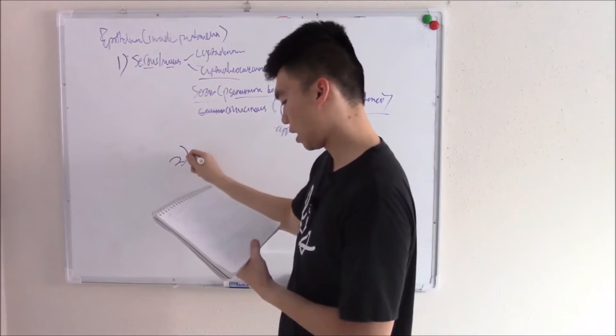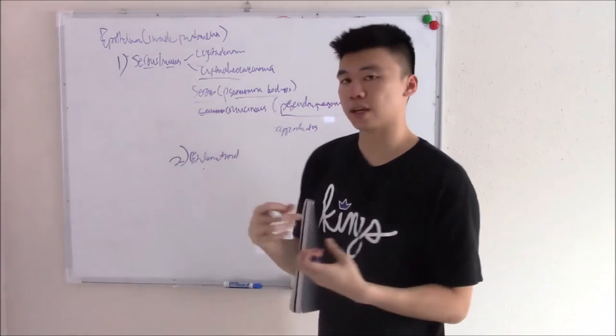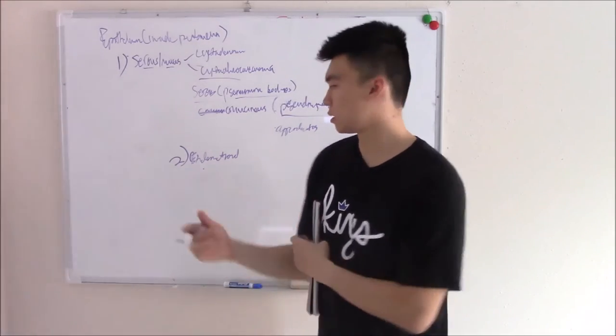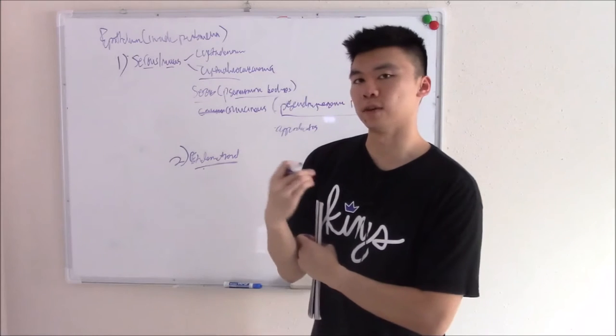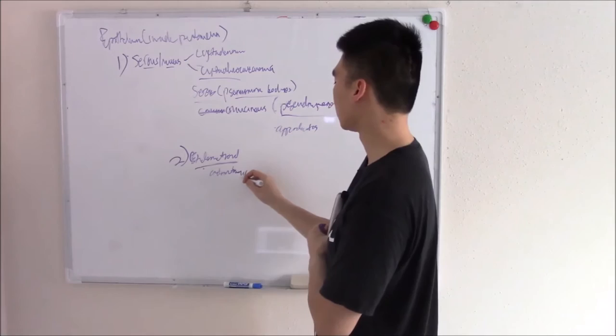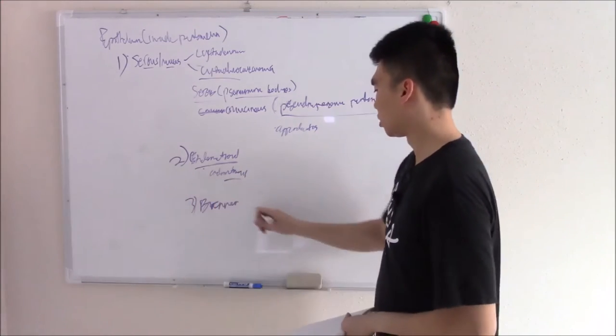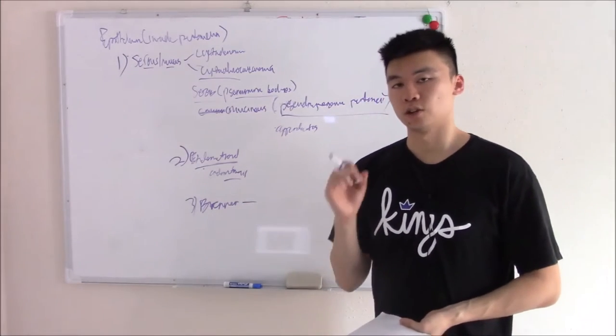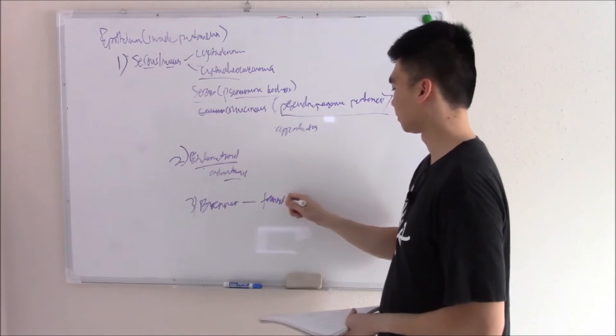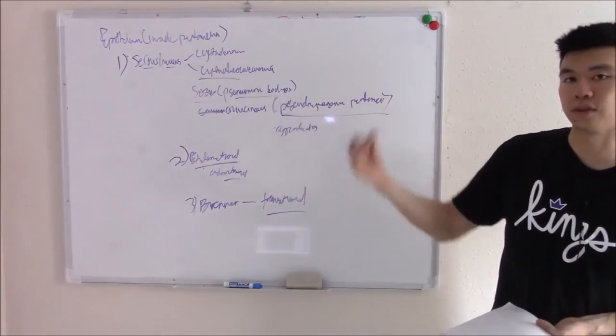Your second class would be endometrioid. We said that endometriosis likes to spread to ovarian sites. Sometimes those can become tumors - that's where we get the endometrioid name from. And the last is Brenner tumor, made up of urinary epithelium - that's transitional epithelium.